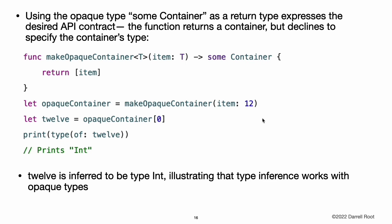In the implementation of makeOpaqueContainerItem, the underlying type of the opaque container is Array of T. In this case, T is Int, so the return value is an array of integers and the item associated type is inferred to be Int. The subscript on the container returns item, which means that the type of 12 is also inferred to be Int.